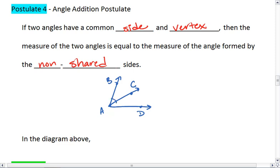Then I can add these two angles together to equal the big angle BAD. In the diagram we just drew, we see that the measure of angle BAC plus the measure of angle CAD equals the measure of angle BAD, the big angle here. Two smaller ones can be added to equal that bigger one.